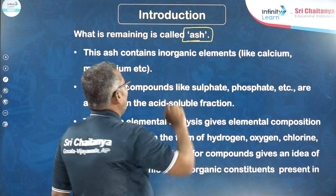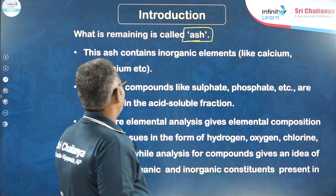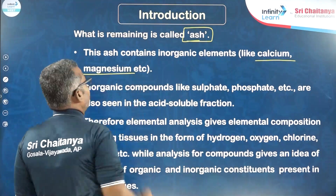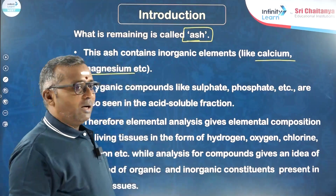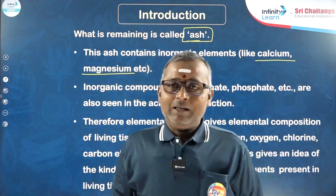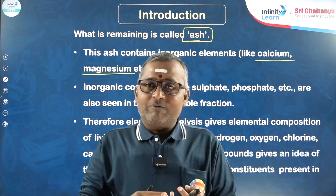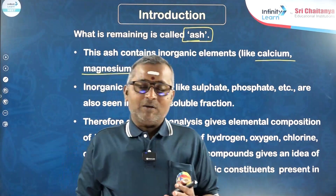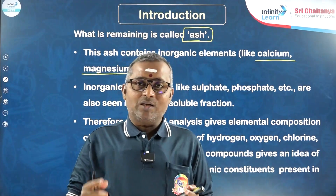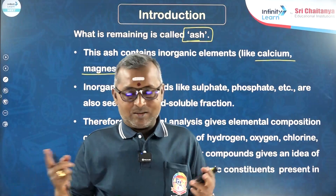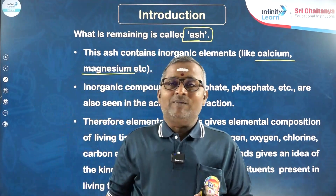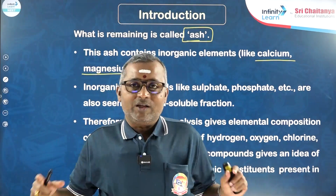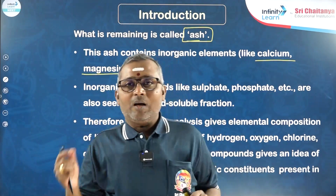When you do the ash analysis, you can find the list of elements present in the living tissues like calcium, magnesium, etc. It is now understood that elemental analysis can help us to know different types of elements present in the living tissues, like carbon, hydrogen, oxygen, nitrogen, chlorine, etc. Compound analysis will help us to know different kinds of chemical compounds present in the living tissues, both inorganic and organic compounds.